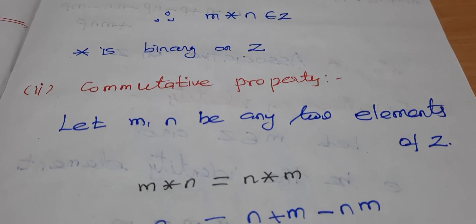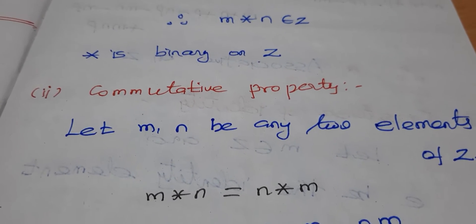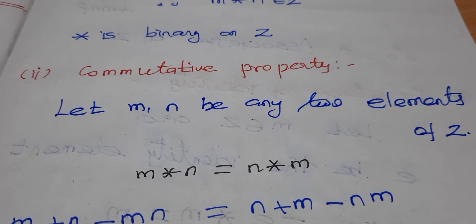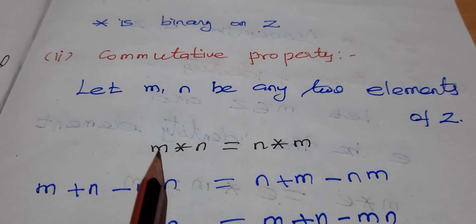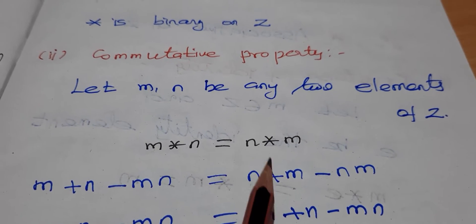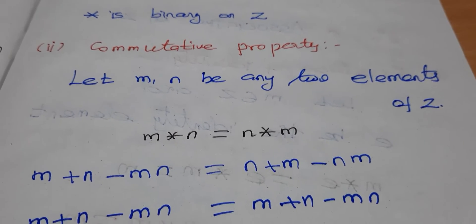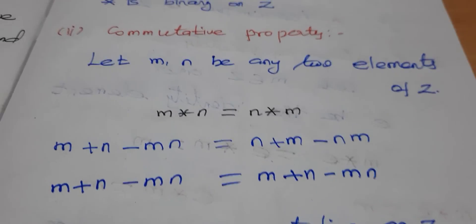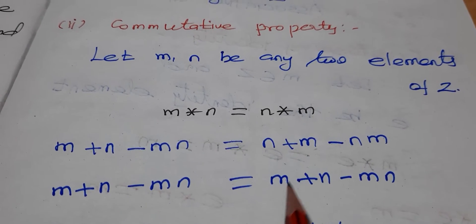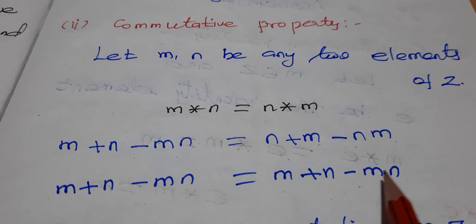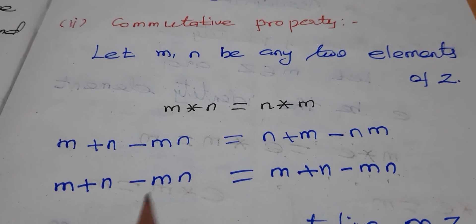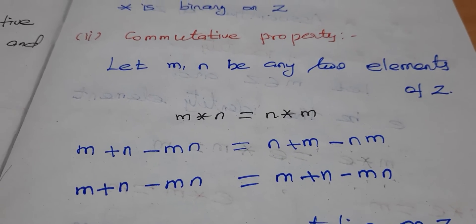Next, the commutative property. We check if m star n equals n star m. m star n equals m plus n minus mn. n star m equals n plus m minus nm. Since m plus n equals n plus m and mn equals nm, we can see the commutative property is true.